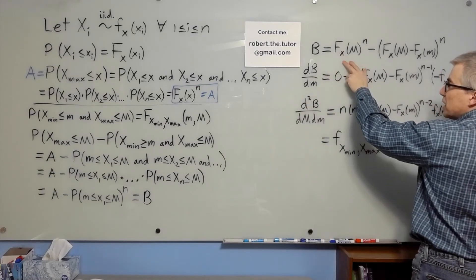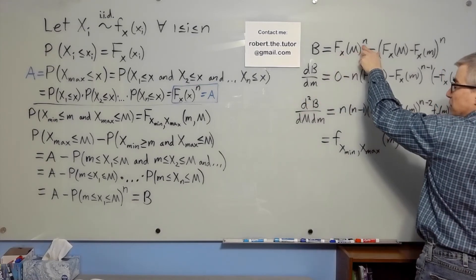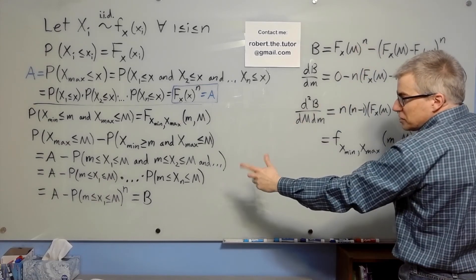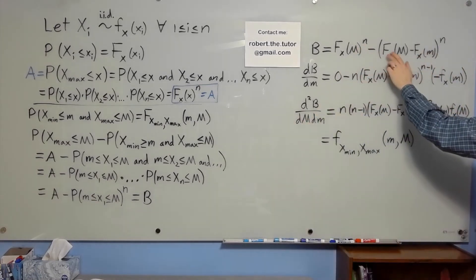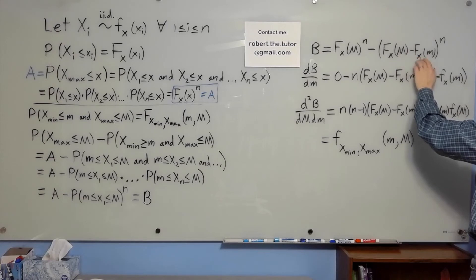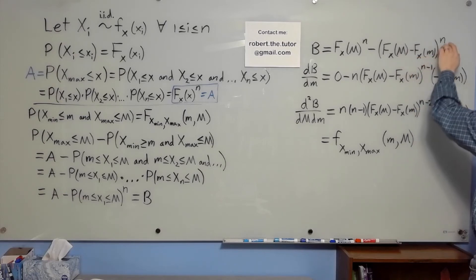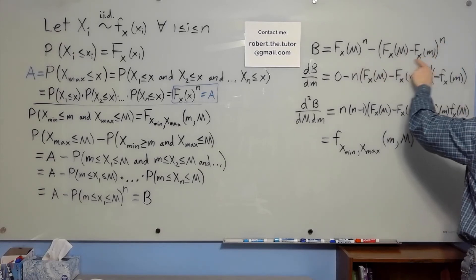Plugging in for that, A is big Fx of big M to the nth power, and the probability of being in between is big Fx of big M minus big Fx of little m to the nth power. There's our joint CDF.